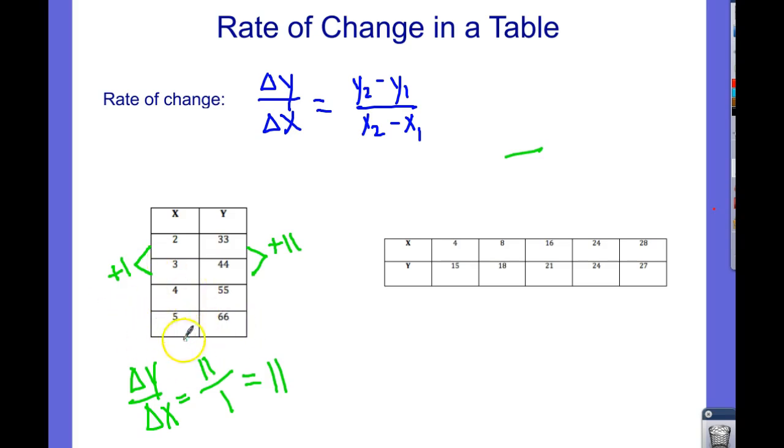It will always be that way because it's linear and it doesn't even matter which intervals you choose. 2 to 5 is 3, plus 3, as long as you choose the same interval here. 33 to 66 is plus 33. So that would be 33 over 3 for my change in y over change in x. And that's still 11 when I divide it. So we're good there.